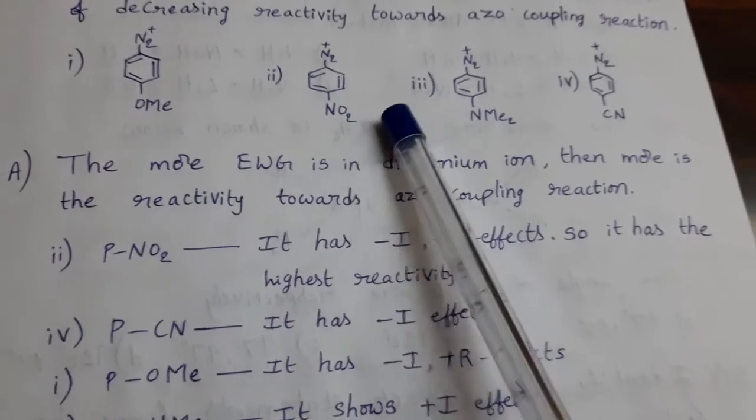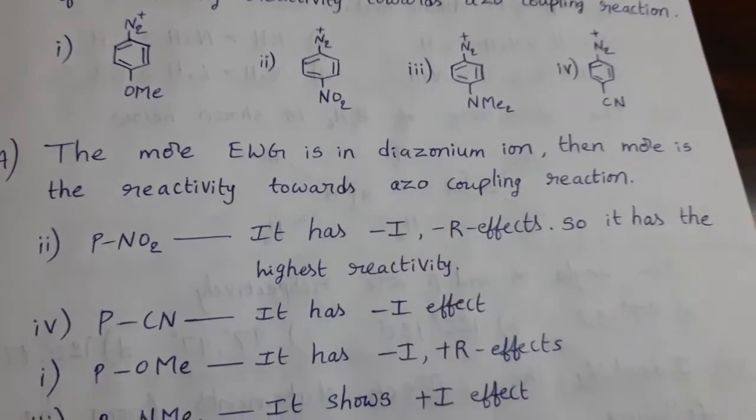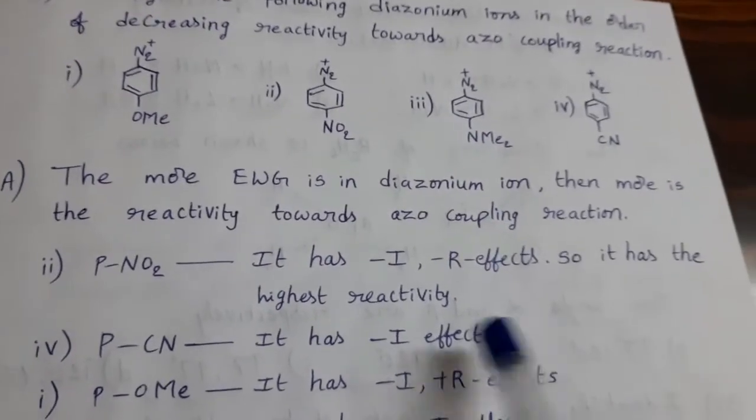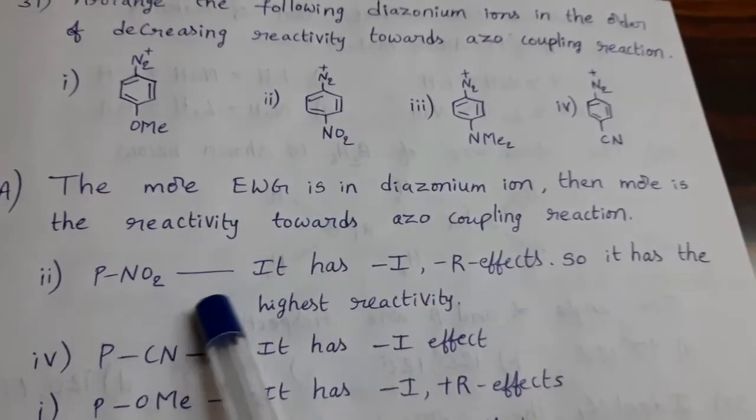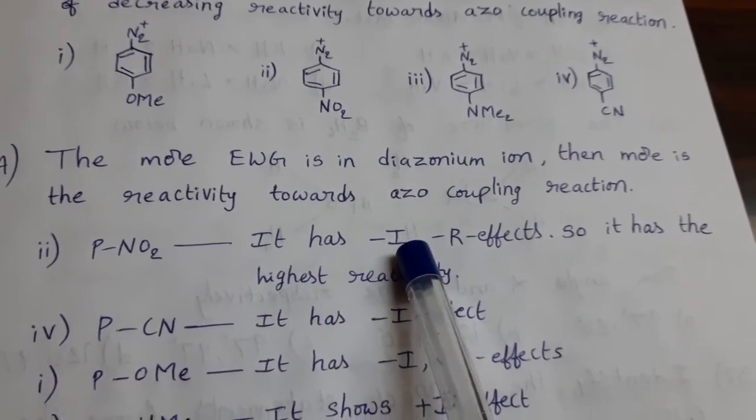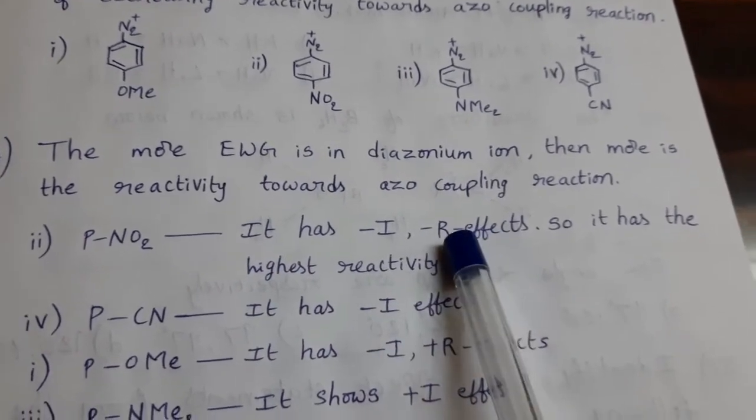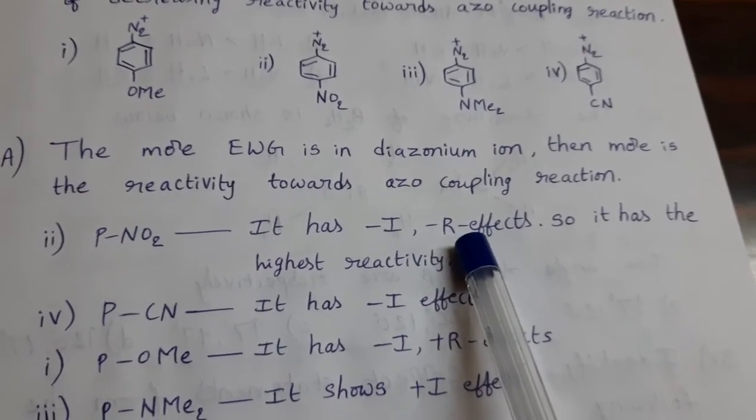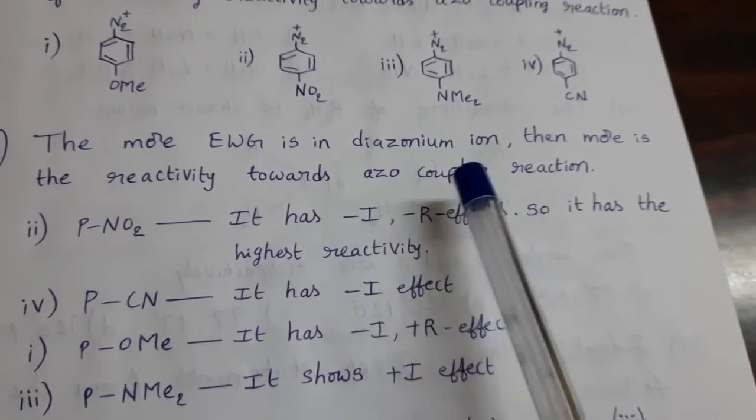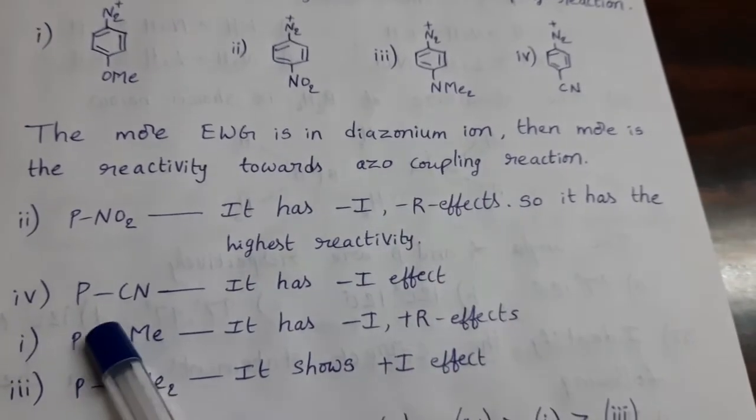In the second ion, at para position NO2 group is there. It is an electron withdrawing group. This nitrite group present at para position exhibits -I effect, negative inductive effect, negative resonance effect, -R effect. So it has the highest reactivity towards azo coupling reaction.